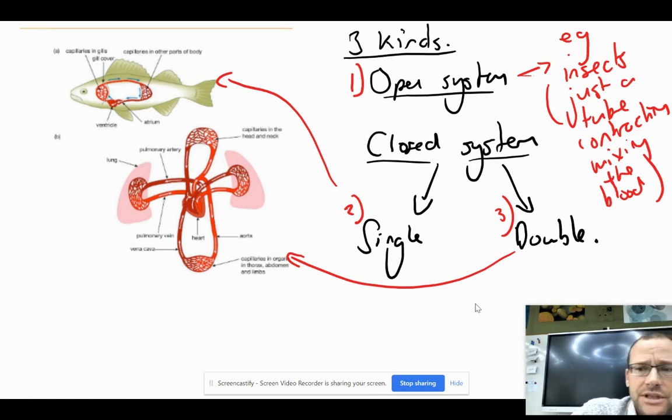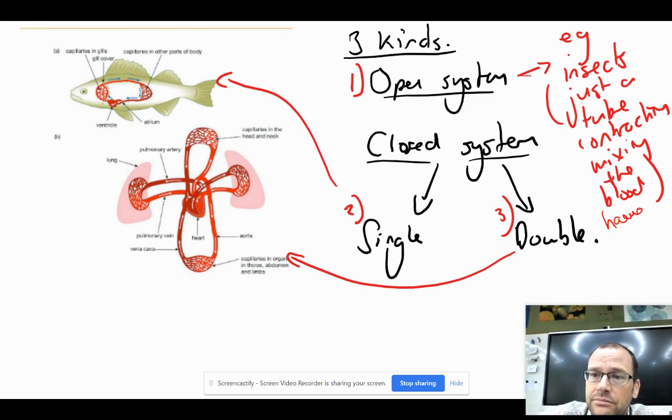So we've got a number of different types of circulatory systems. We don't study the open system like in insects in GCSE, but it's worth knowing that in an insect there is no complicated heart or pump - it's just a pumping contracting tube, mixing the blood, or we don't even call it blood actually, we call it hemolymph, which is an oxygenated fluid that's actually inside the exoskeleton of that insect or arthropod.